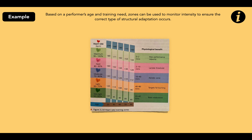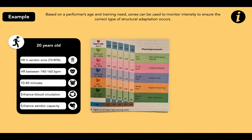So let's look at an example. This is the figure from the book, page 91, and based on a performer's age and training need, zones can be used to monitor intensity to ensure the correct type of structural adaptation occurs. For example, to improve aerobic capacity, a heart rate within the aerobic zone should be maintained. A heart rate between 140 to 160 beats per minute for around 10 to 40 minutes will enhance the aerobic capacity and blood circulation of a 20-year-old. As you can see, the zones range from very light work to maximum.